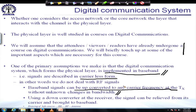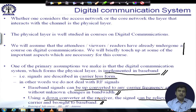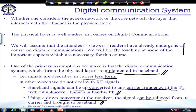Using a down-converter at the receiver, the signal can be relieved from its carrier and brought back to baseband. So at the transmitter we have a baseband signal; at the receiver we again have a baseband signal. In between, what we have is the passband signal propagating through the channel. Once it reaches the receiver, it is down-converted.